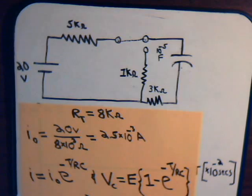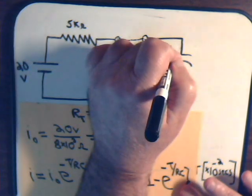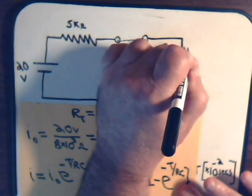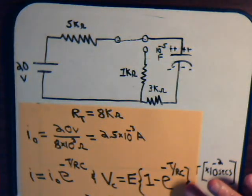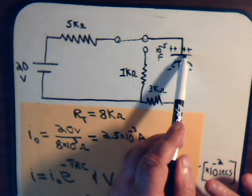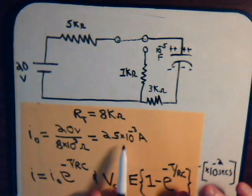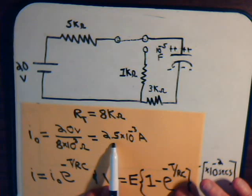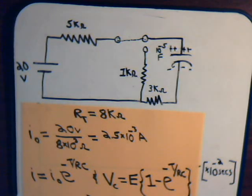When the current is flowing the capacitor charges — as discussed in a previous video, it charges with positive charges on one plate and negative charges on the other. Thinking of the current from the battery going plus to minus, the voltage on the capacitor fights against that current, so as the capacitor charges up the current decreases from its initial value of 2.5 milliamps, eventually reaching zero when the capacitor charges to 20 volts.